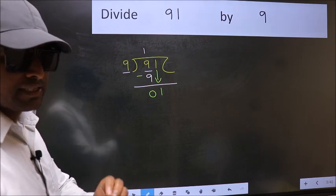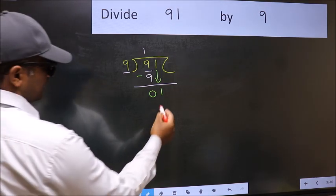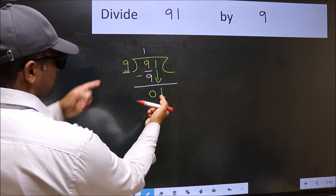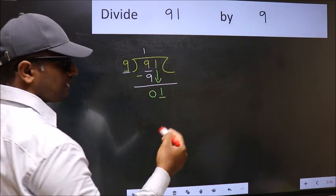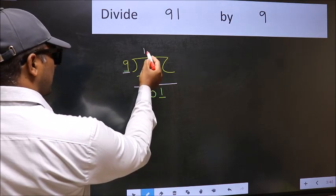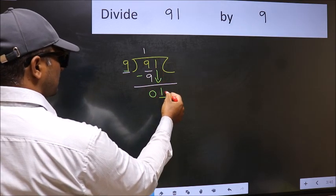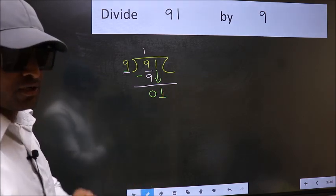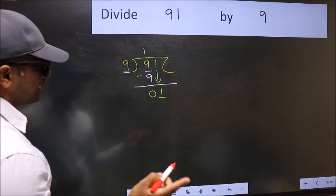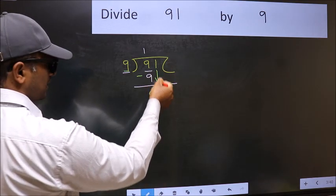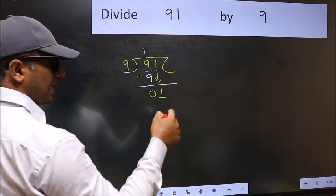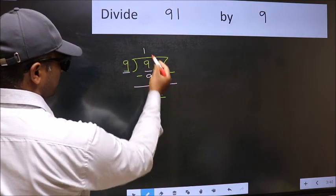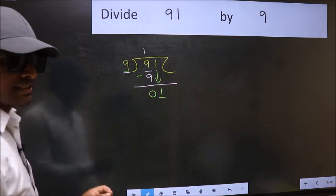And the mistake is this. Here we have 1 and here 9. 1 is smaller than 9. So what many do is they directly put dot and take 0, which is wrong. Why is it wrong? Because just now you brought this number down, and in the same step, you want to put dot and take 0. Which is wrong.